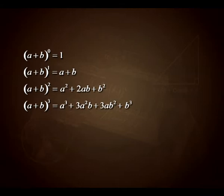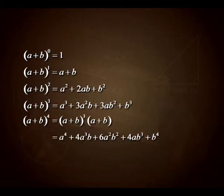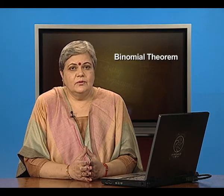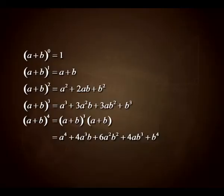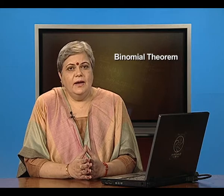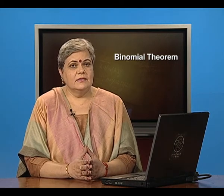Start with thinking about what is (a+b)^0? That is nothing but 1. And (a+b)^1 is a+b. (a+b)² is a²+2ab+b². Write down the expansion of (a+b)³ and now try to find out what (a+b)^4 is. You will depend on your previous knowledge — simply taking (a+b)³ multiplied with (a+b). Take a minute, expand, and let us see if you get the same answer.